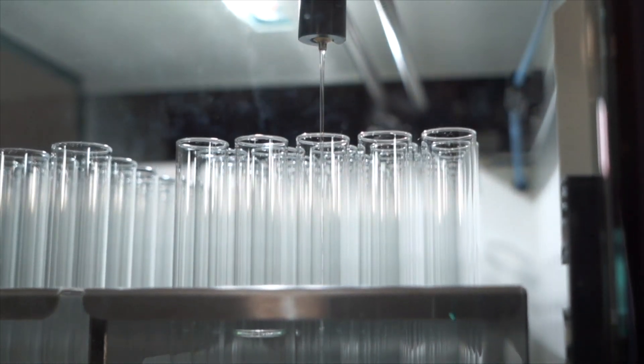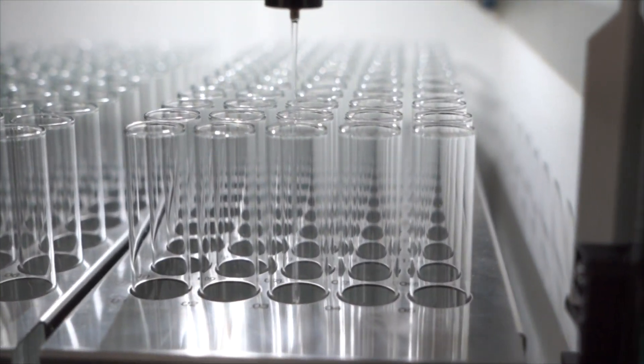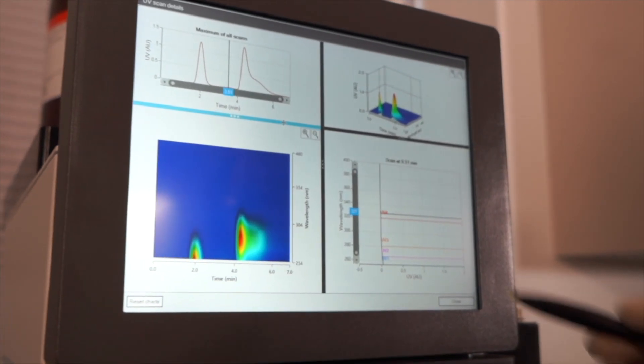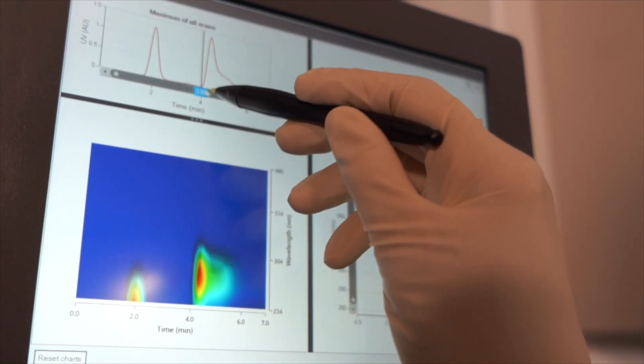After your run is complete, your sample will be purified in the sealed fraction collection compartment. The chromatogram detailing the results of your run are easily printed, exported to USB, or shared with another computer using the built-in touchscreen.